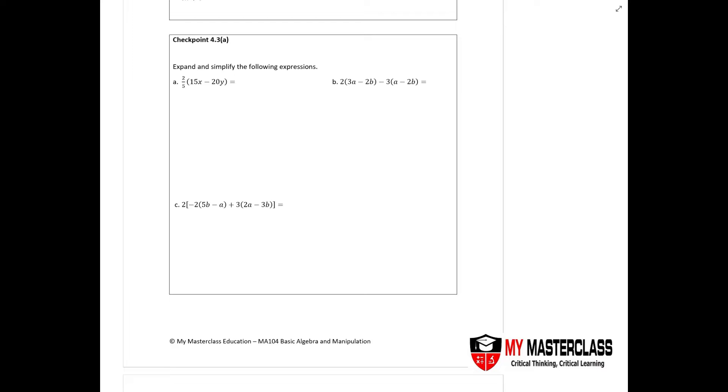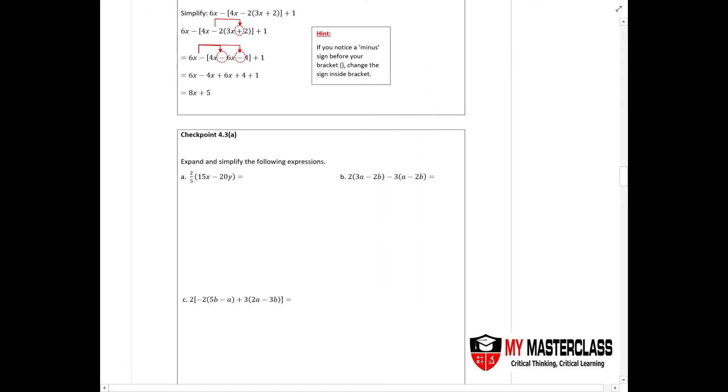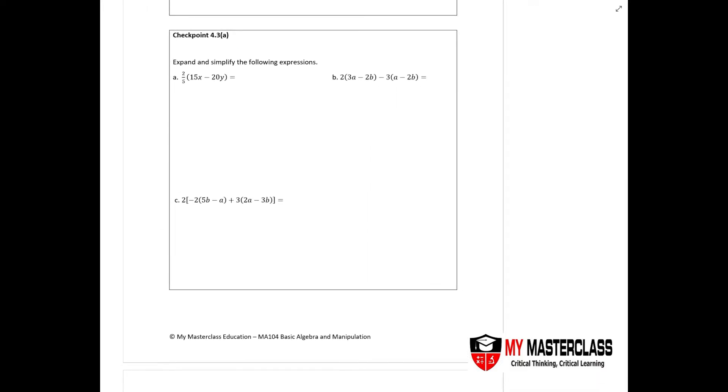Now in the chapter of basic algebra manipulation, let's take a look at checkpoint 4.3a. This question is telling you to expand and simplify the following expressions. So let's take a look at the first part. I have 2/5 multiplied by (15x - 20y). So when you multiply it this way, you just need to do your rainbow method.